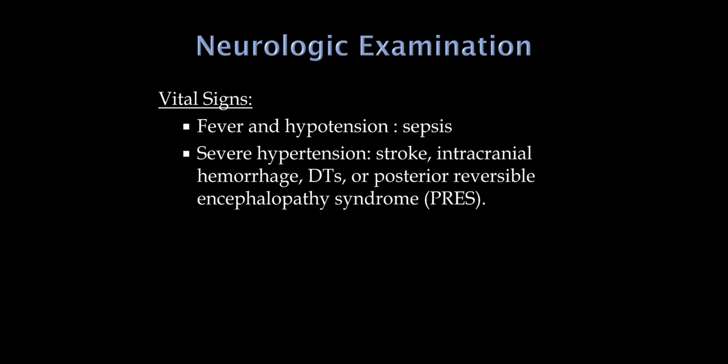Now let's go through the neurologic examination. First, just look at vital signs. If we've got a confused patient in the emergency room with fever and low blood pressure, we're dealing with sepsis — an infectious etiology such as urinary tract infection or pneumonia. Very high blood pressure suggests a stroke or hemorrhage in the brain, since blood pressure always rises as an attempt to perfuse the brain.